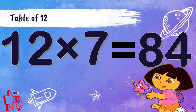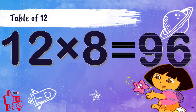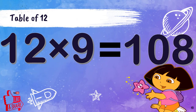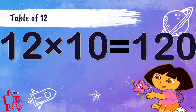12 7s are 84. 12 8s are 96. 12 9s are 108. 12 10s are 120.